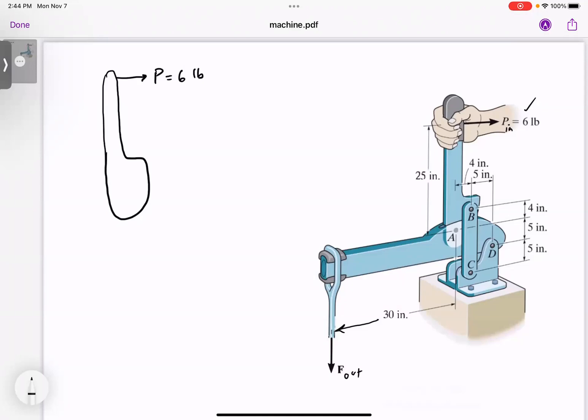If you look at A, obviously it's a pin so let me show you the reactions that are developed there. I'm going to call it Ax, Ay. I really don't know anything about the direction of these reactions developed at the pin so I assume they are in the positive direction. At B, you would think you have a pin so you have Bx and By.